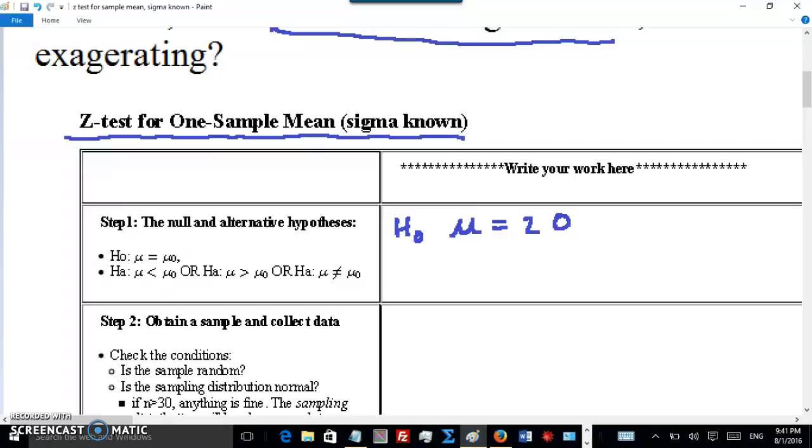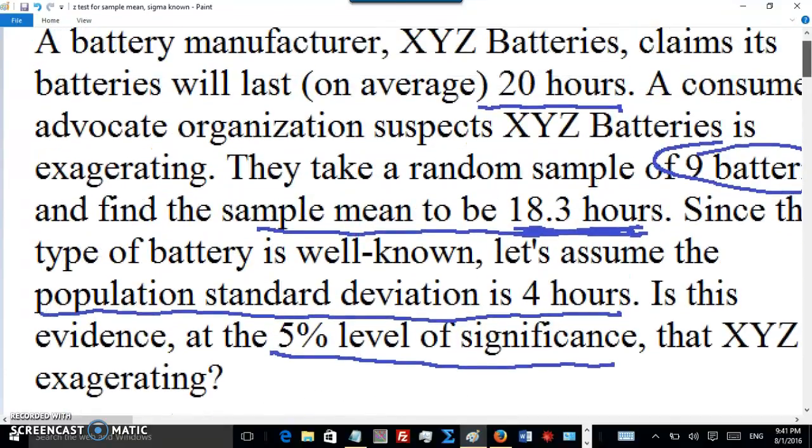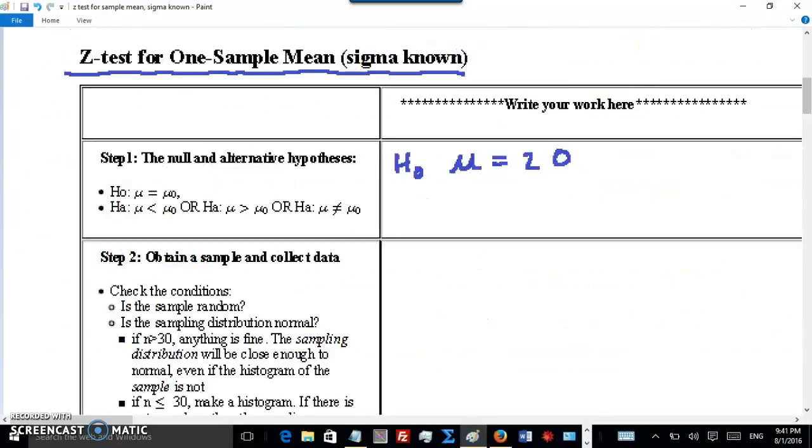The alternate is μ is either less than, greater than, or not equal. In this case, we have a suspicion. The consumer advocate organization suspects XYZ is exaggerating. If 20 hours is an exaggeration, then that means the real population is actually less than 20. So we have our alternate is μ is less than 20.